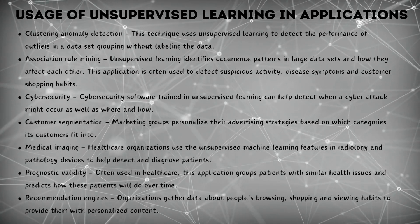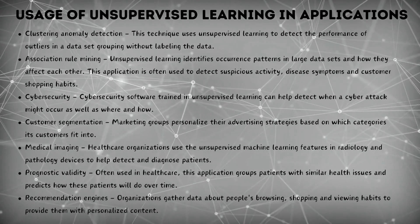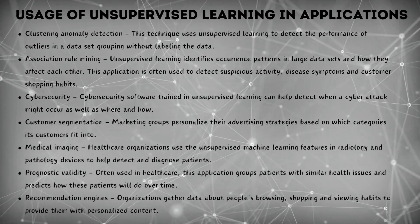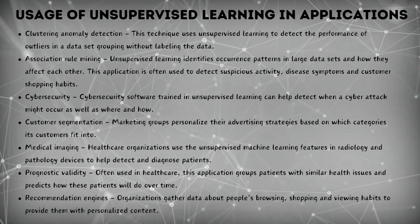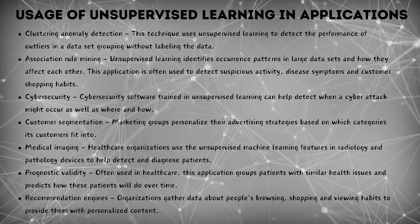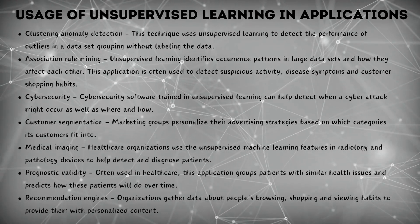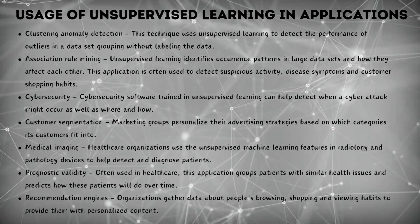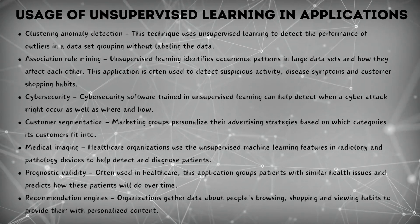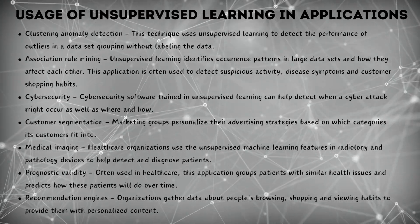Usage of unsupervised learning in applications: clustering anomaly detection uses unsupervised learning to detect the performance of outliers in a dataset without labeling the data. Association rule mining identifies occurrence patterns in large datasets and how they affect each other — often used to detect suspicious activity, disease symptoms, and customer shopping habits. Cybersecurity software trained in unsupervised learning can help detect when a cyberattack might occur, as well as where and how. Customer segmentation allows marketing groups to personalize advertising strategies. Medical imaging helps healthcare organizations detect and diagnose patients using radiology and pathology devices. Prognostic validity groups patients with similar health issues to predict outcomes over time. Recommendation engines gather data about people's browsing, shopping, and viewing habits to provide personalized content.